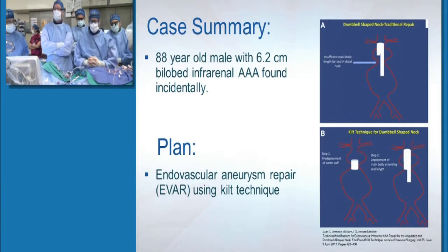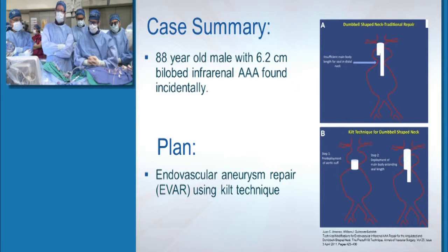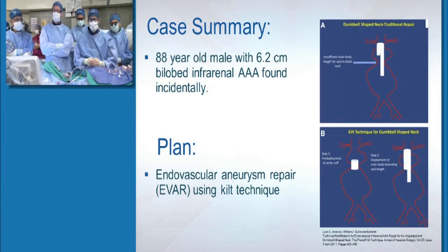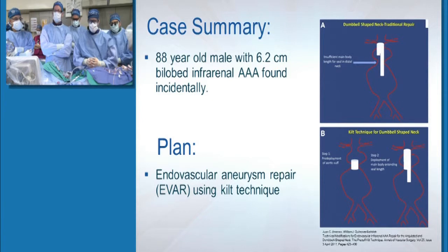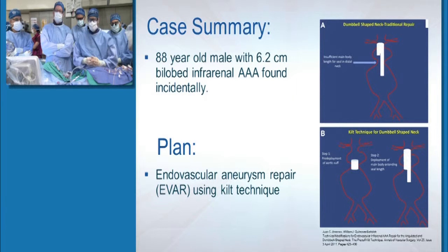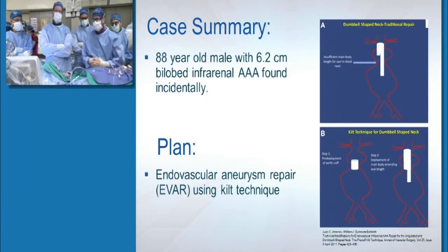In summary, we have an 88-year-old male with a 6.2-centimeter bilobed infrarenal abdominal aortic aneurysm which is asymptomatic. Our plan today is to perform endovascular aneurysm repair using a kilt technique. Thank you.